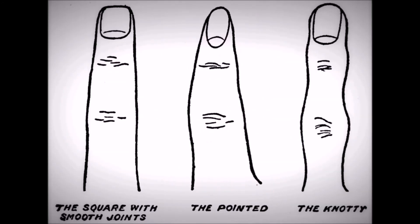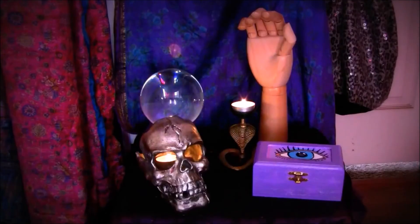If the thumb is square, there is practical application. If conical, the artistic viewpoint. If pointed, idealistic. A second flange which is too short denotes a tactless person and a lack of reasoning.